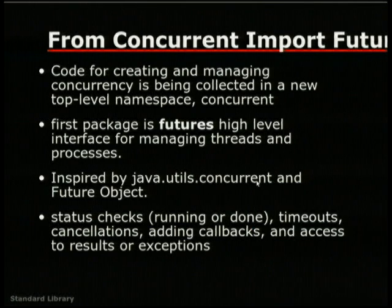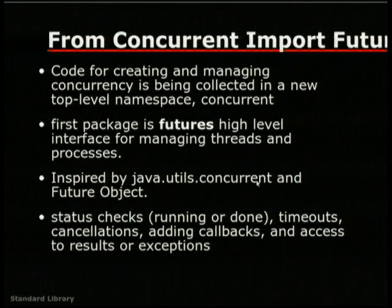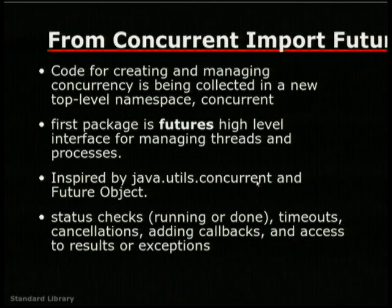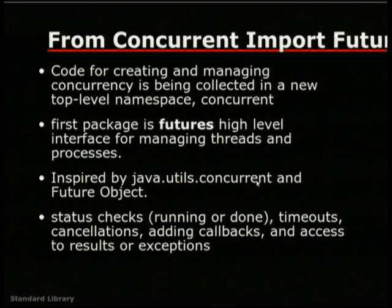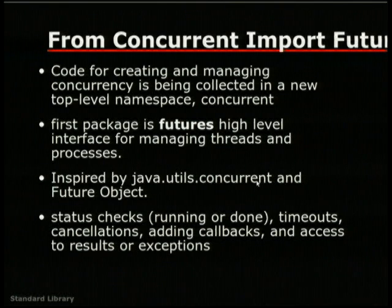A new namespace called concurrent was added in Python 3.2, inspired by Java's utils.concurrent. It provides a future object and a high-level interface for managing threads and processes, where you can run multiple threads in parallel and have control over the threads you are running. You can check statuses, timeouts, cancellation, add callbacks, and access results and exceptions.